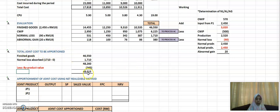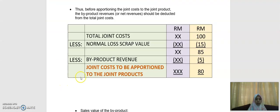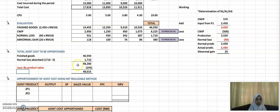The total joint cost to be apportioned is 48,015. To recap the formula: start with the finished goods value, deduct the normal loss scrap value — which is zero in this question — and then deduct the byproduct value of 245. This gives you the total joint cost of 48,015 to be apportioned to the joint products.